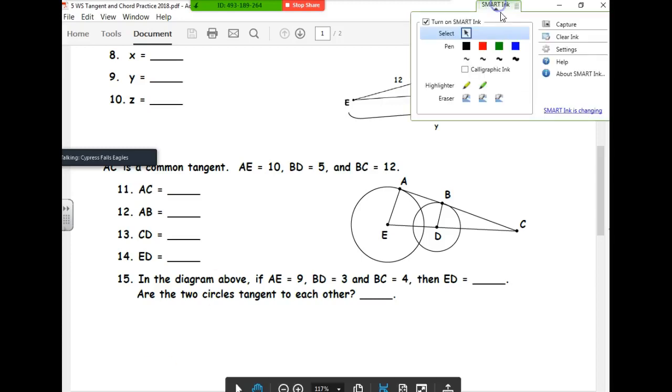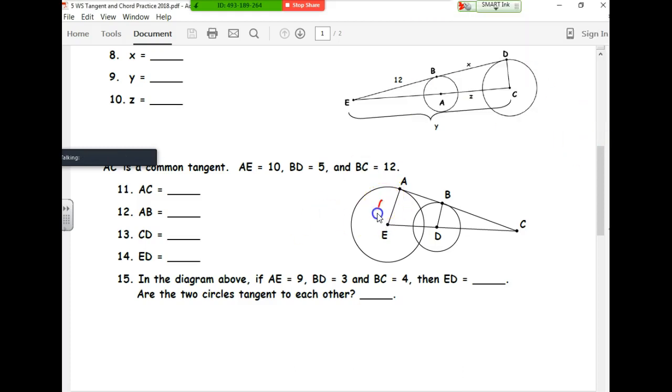AC is a common tangent, meaning it's tangent to both circles at once. AE is 10, BD is 5—these are the radii of the circles. BC is 12.